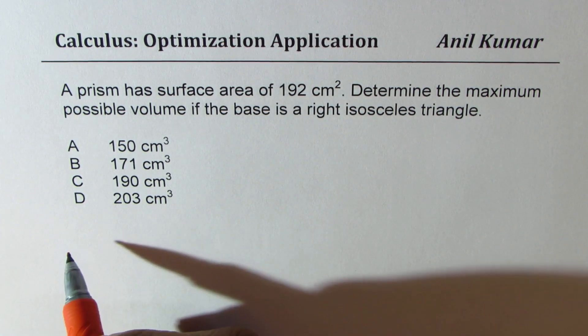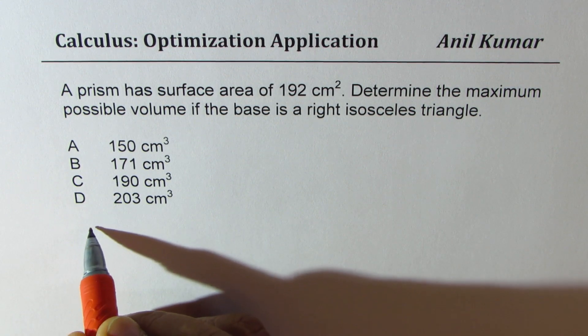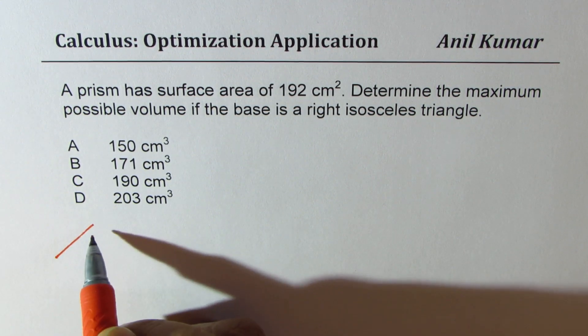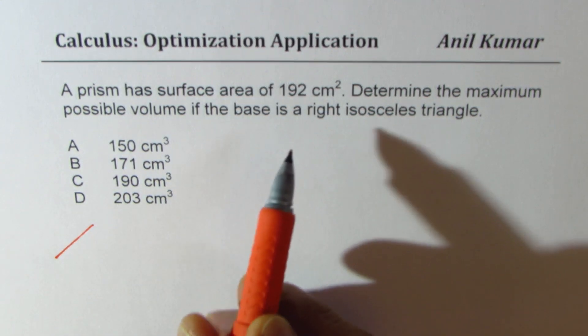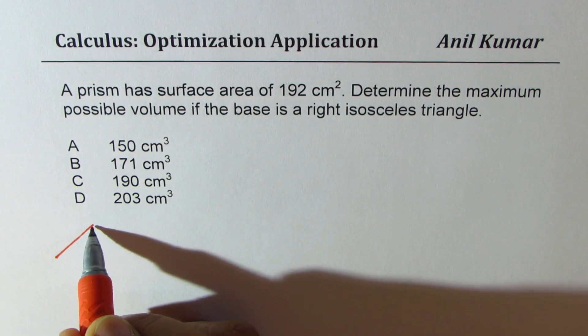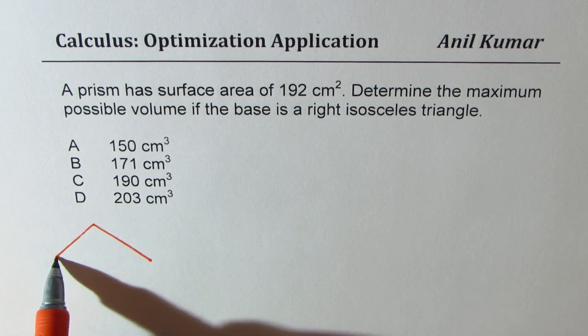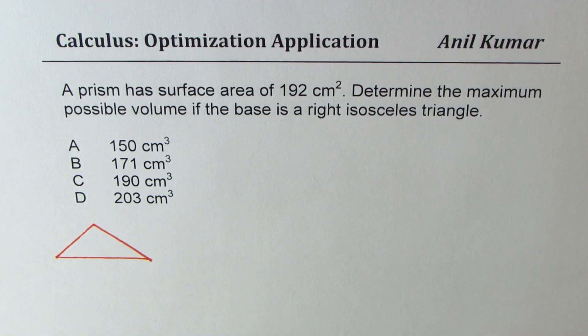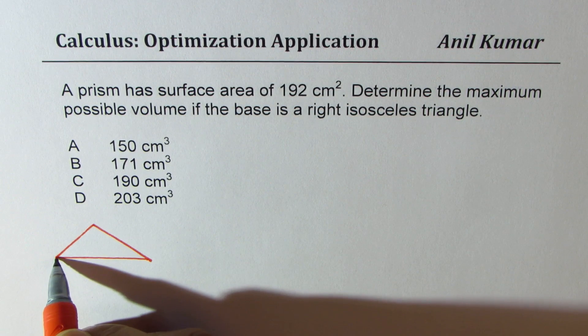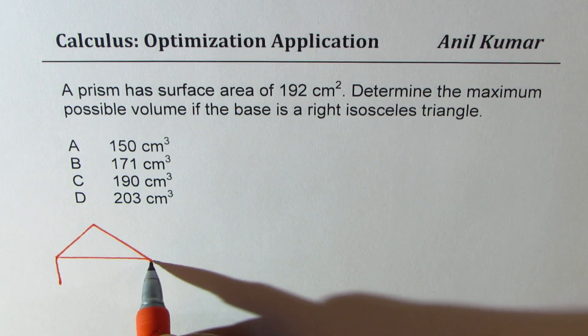Now let's try to sketch and then derive a formula for the prism with right isosceles triangle. So here is an isosceles triangle and let's make a prism out of it.